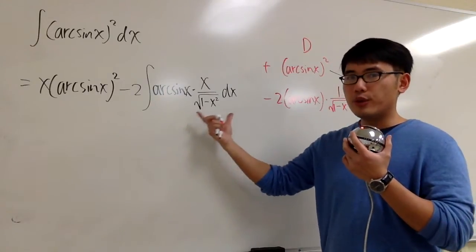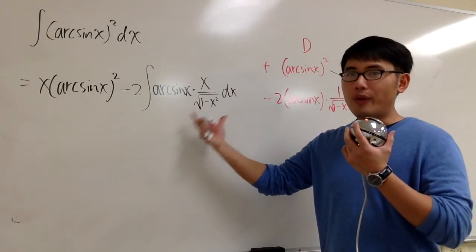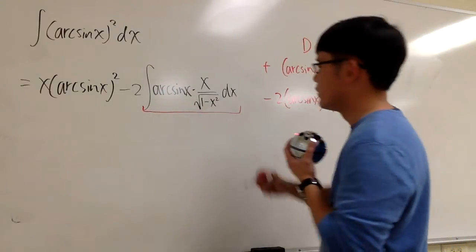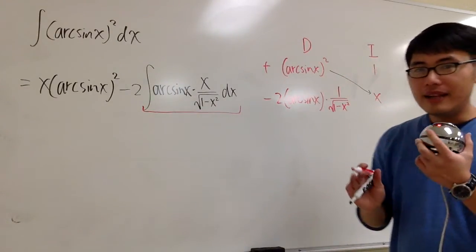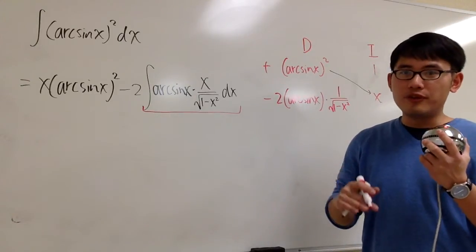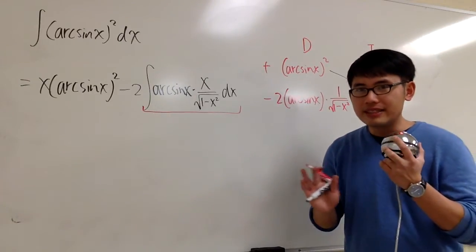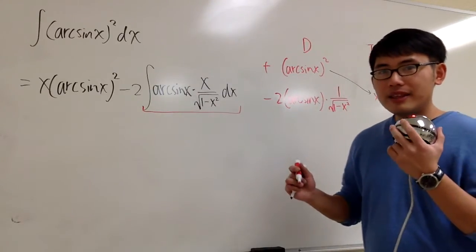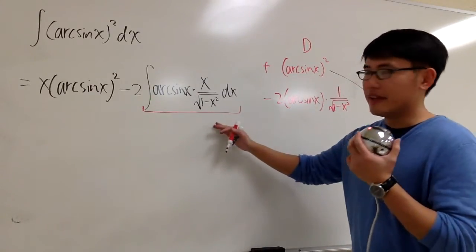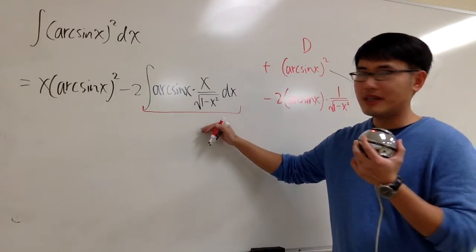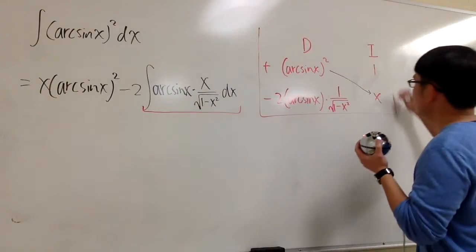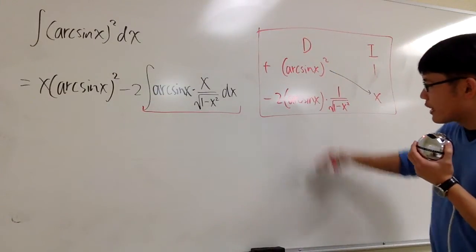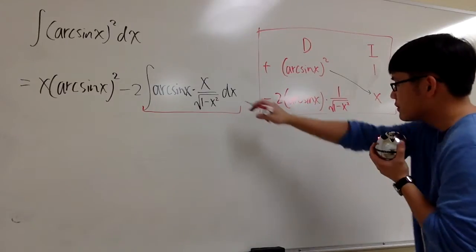We actually know how to integrate this, but we have to use integration by parts again. This is what I mentioned previously — why the DI method doesn't always work out magically. The reason is we have to set up a new DI method for this particular integral. The first table is done; I can't continue that column. I have to set up another DI method for this integral.